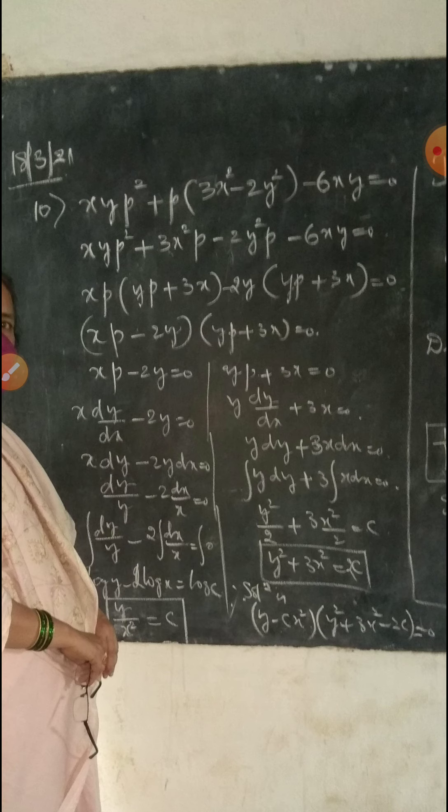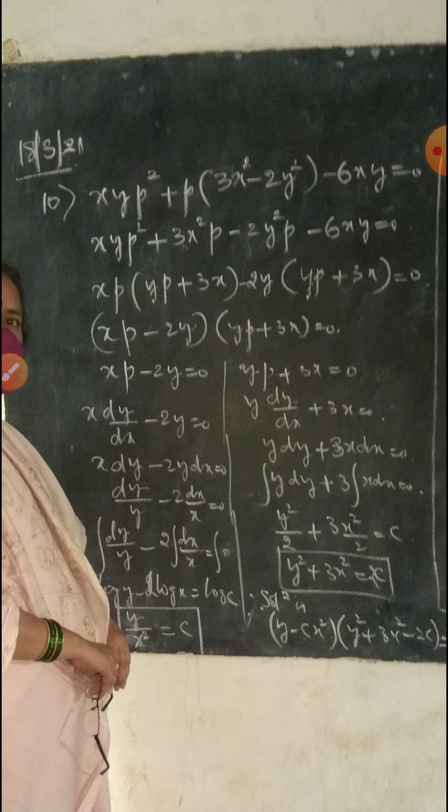So this factors as: (XP - 2Y)(YP + 3X) = 0. This gives us two equations: XP - 2Y = 0, and YP + 3X = 0.